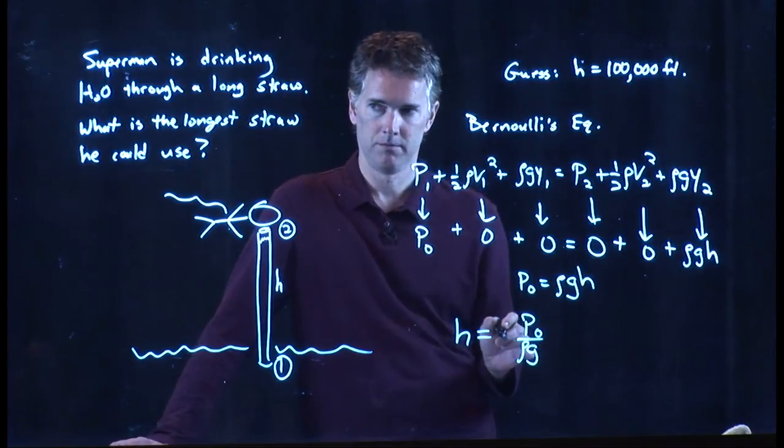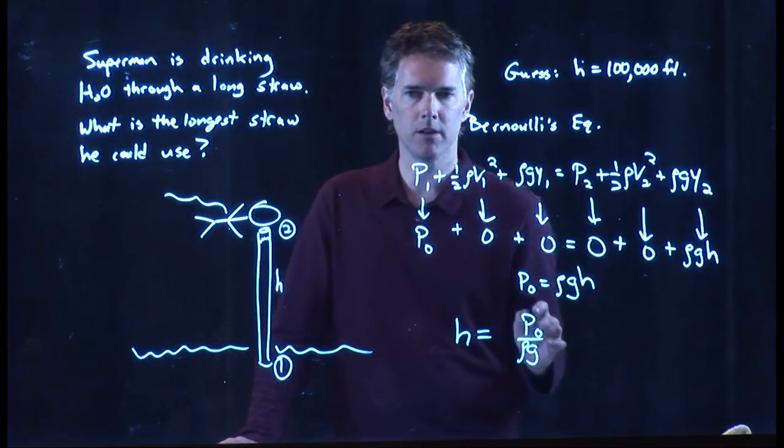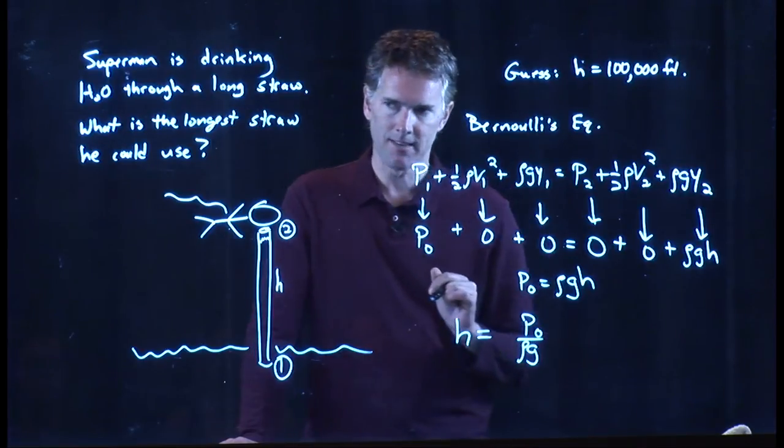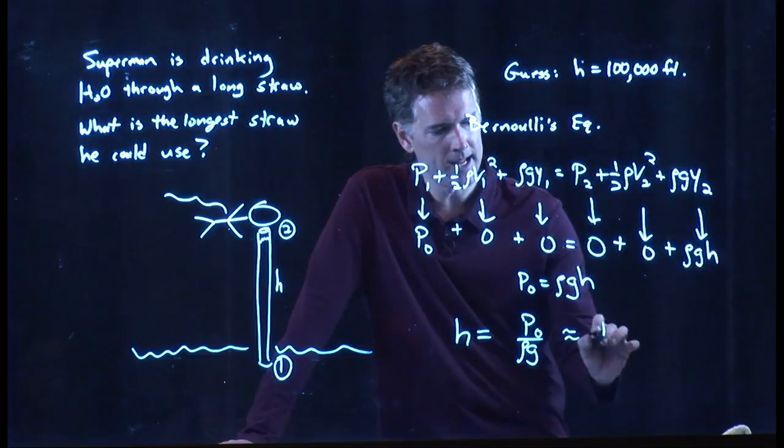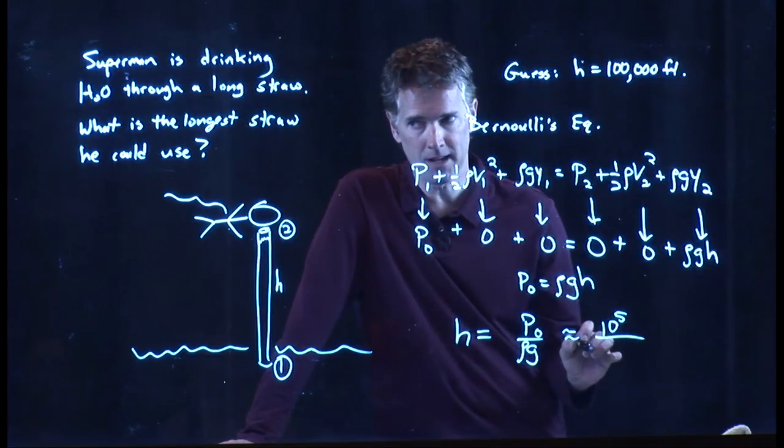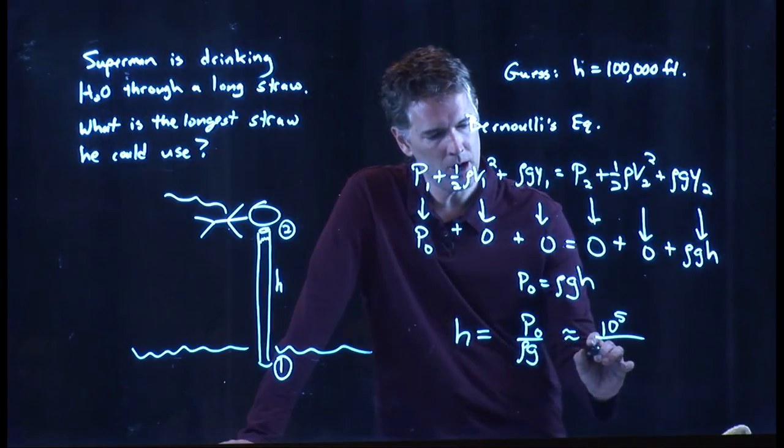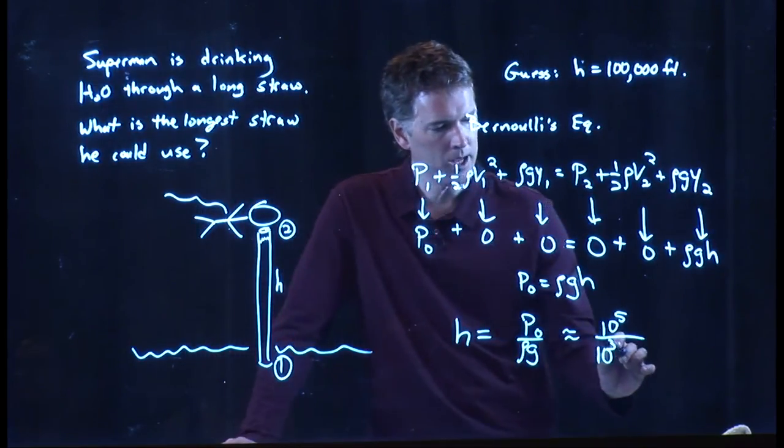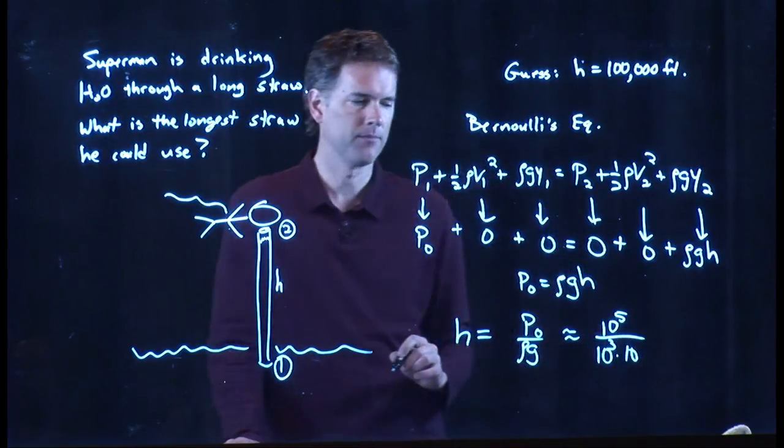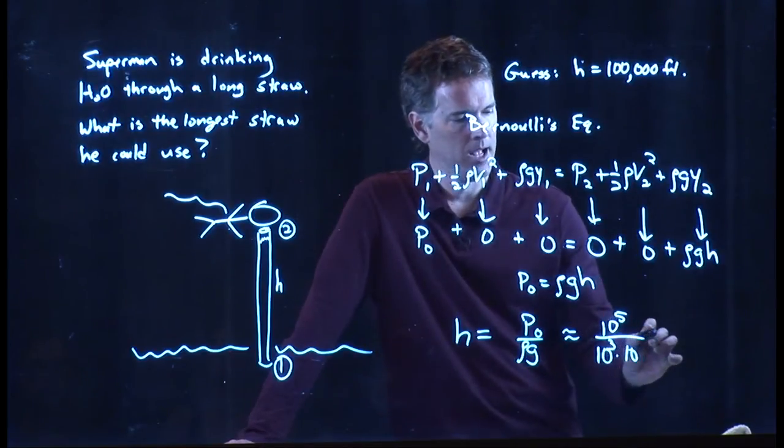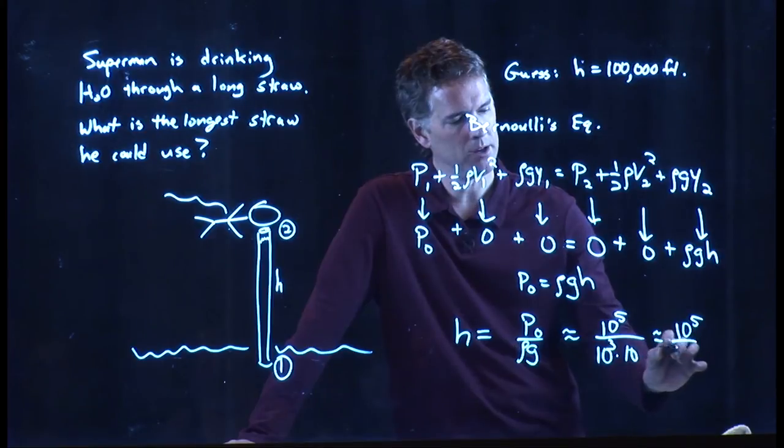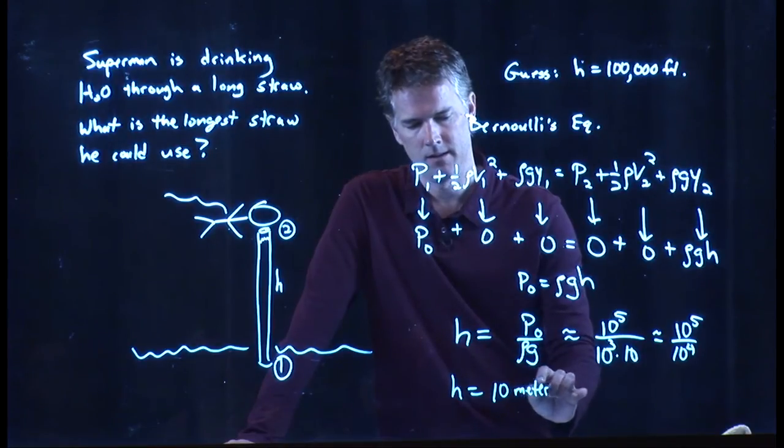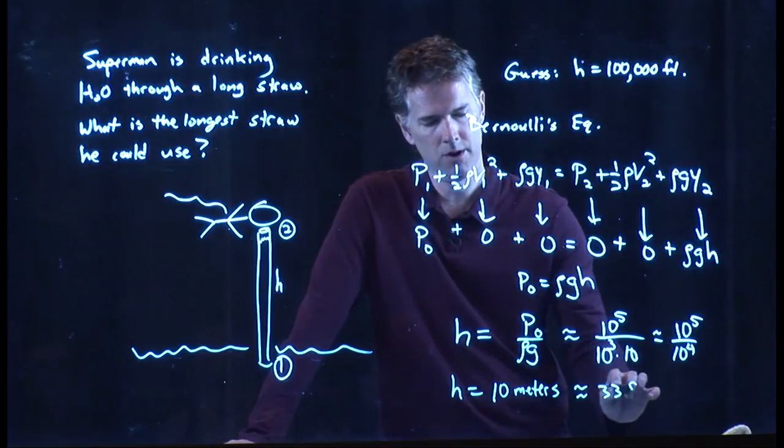H is equal to P0 over rho G. And now you can plug in those numbers. You know what P0 is. It's one atmosphere. You have to put it in Pascals. You know rho. It's about 1,000 kilograms per cubic meter. You know G. It's 9.8. So let's put them in. We've got 10 to the 5 in SI units. 10 to the 5 Pascals for one atmosphere. We've got rho, which is 10 to the 3. It's 1,000 kilograms per cubic meter. And we have G, which is another 10. It's really 9.8, but we're going to say it's 10. And so we get 10 to the 5 over 10 to the 4, which is 10.